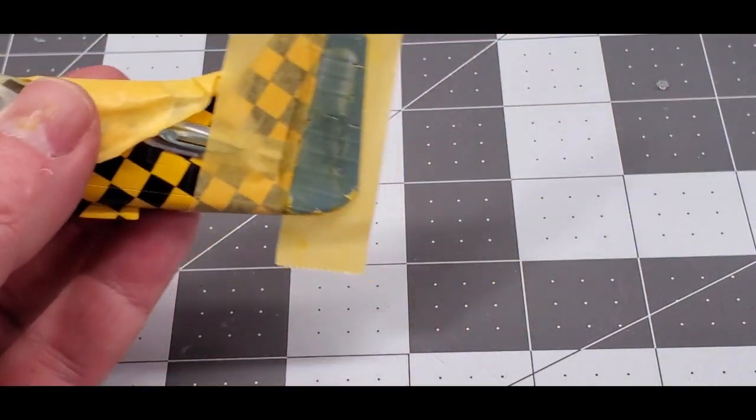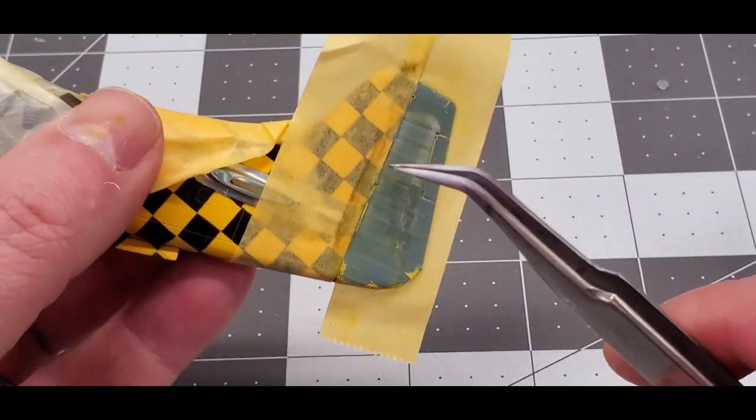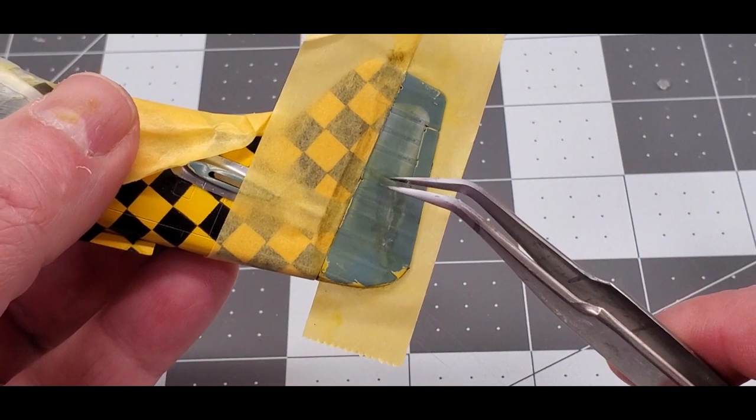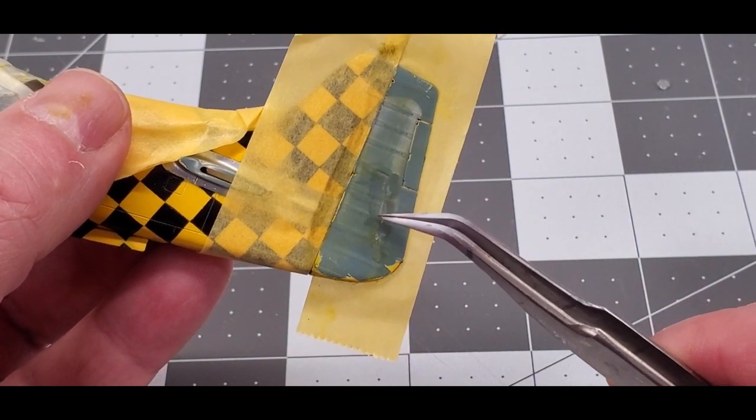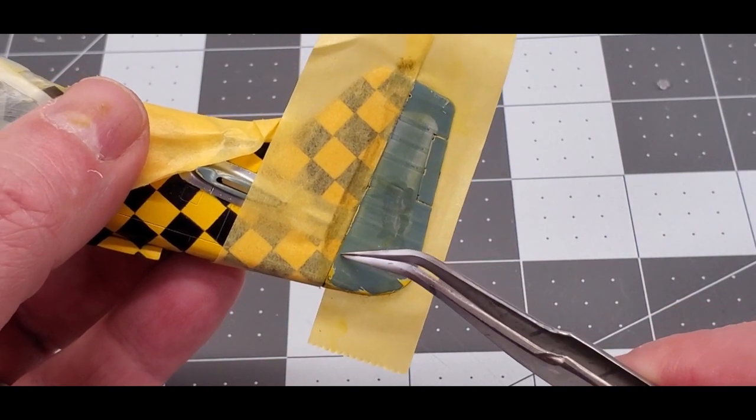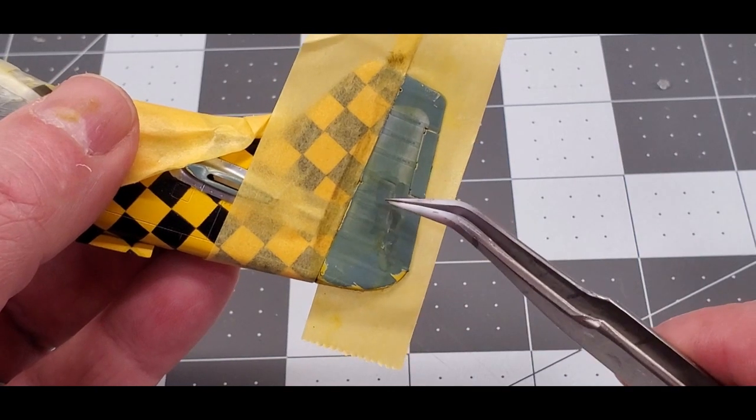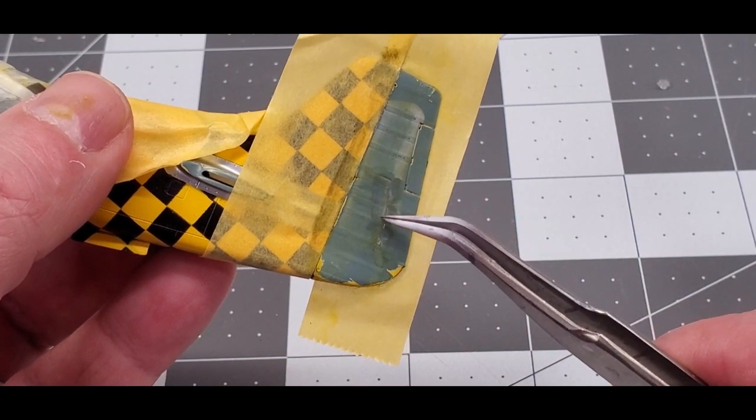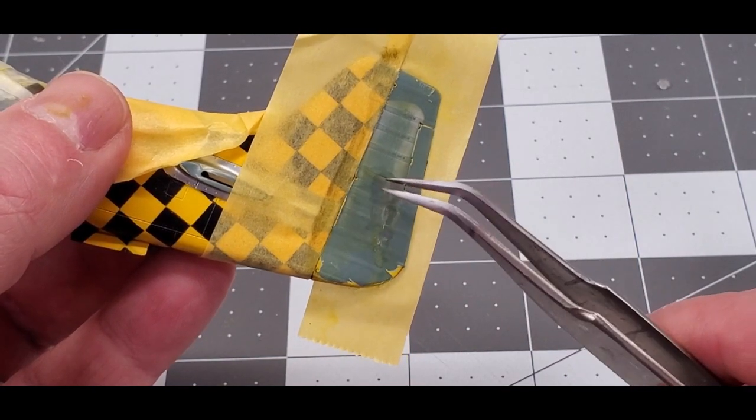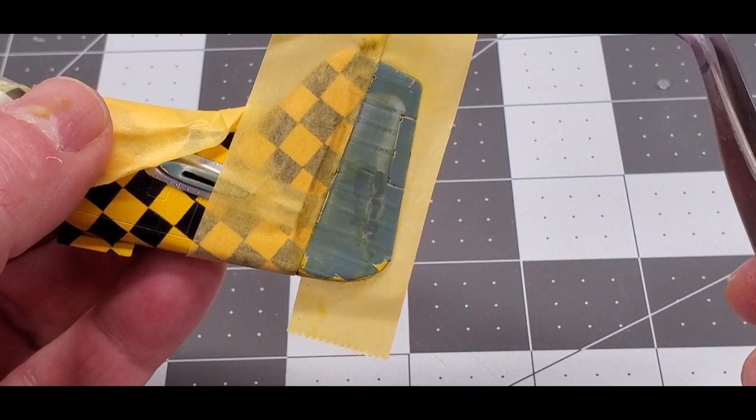However, I did suffer somewhat of a major setback, and that's what you're looking at right here. This part of the rudder, just to the rear of where I'm circling, pushed in. It literally fractured along this back end and pushed into the kit. And I don't know why it did that.